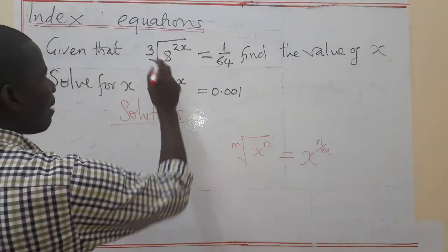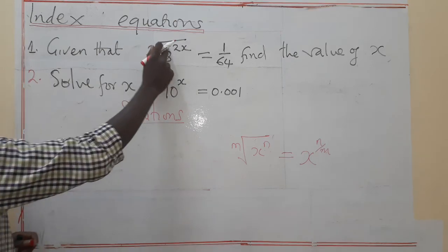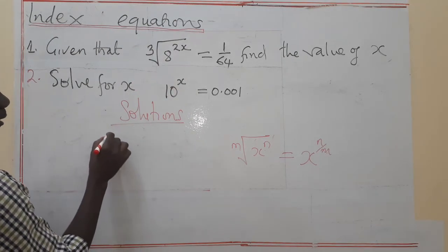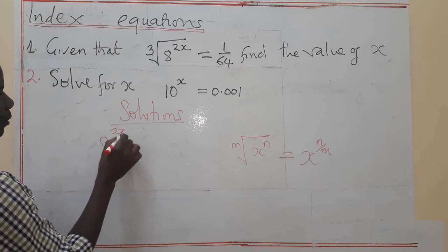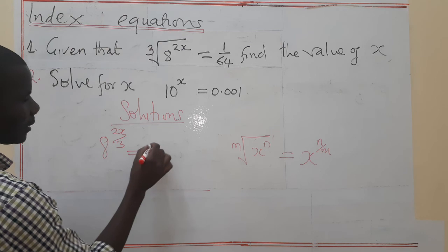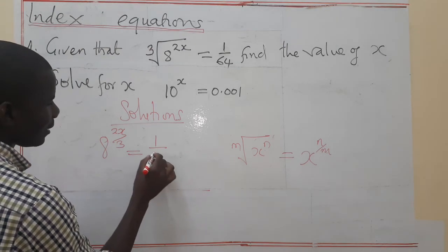So this expression now, I'm looking at the answer. We need to write it as 8^(2X/3). This is supposed to be equated to 1/16. I mean 1/64.